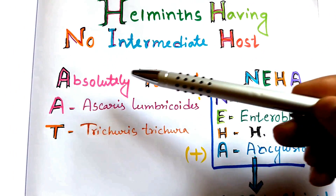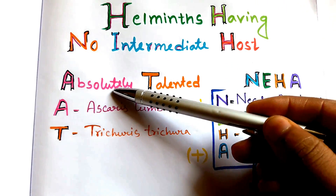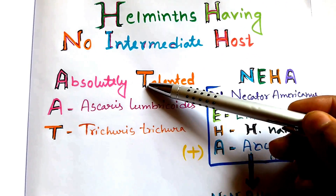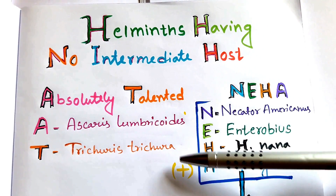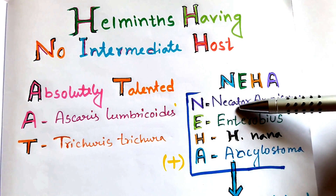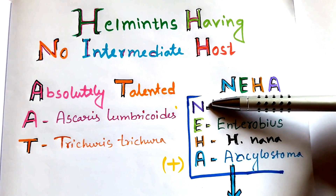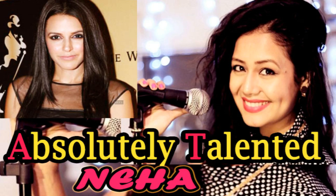Now just add 'Absolutely Talented' to NEHA. By 'A' we can find Ascaris lumbricoides, and 'T' for Trichuris. So just add them to the non-bile stained egg organisms, and that way we'll be knowing all the helminths having no intermediate host.